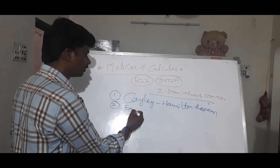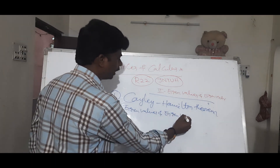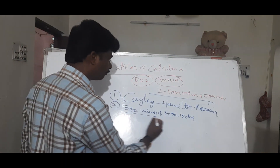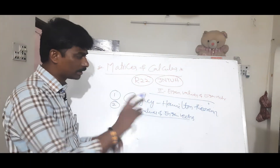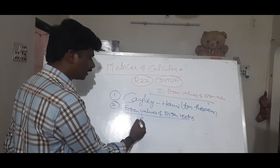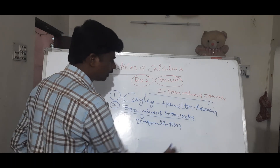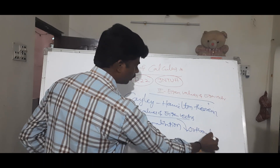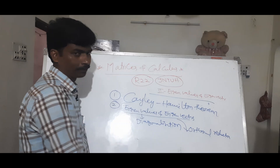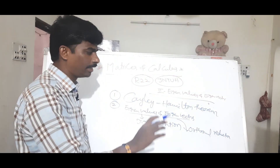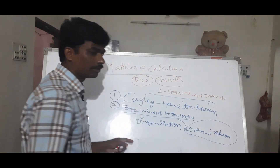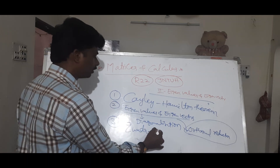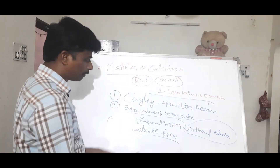We will find eigenvalues and eigenvectors. If you want to use diagonalization, you will solve half the problem. If you use the Cayley-Hamilton theorem, you can prepare for any problem. Diagonalization — what is diagonalization? What is orthogonal reduction? Diagonalize the matrix A by orthogonal reduction. Third is quadratic form.